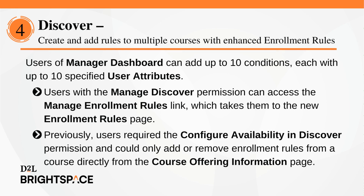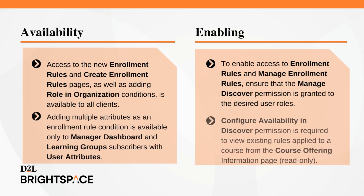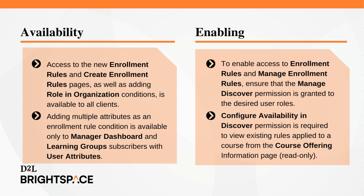Users of Manager Dashboard can add up to 10 conditions, each with up to 10 specified user attributes. Users with the Manage Discover permission can access the Manage Enrollment Rules link, which takes them to the New Enrollment Rules page. Previously, users required the Configure Availability and Discover permission, and could only add or remove enrollment rules from a course directly from the Course Offering Information page. Access to the New Enrollment Rules and Create Enrollment Rules pages, as well as adding Role in Organization conditions, is available to all clients with the proper permissions.